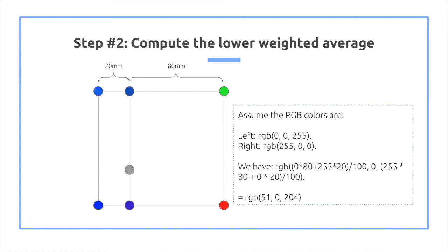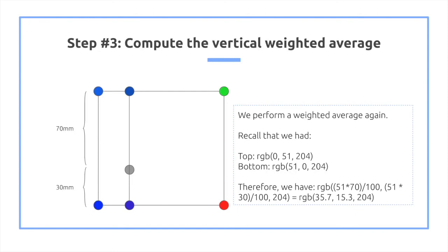We actually do the exact same thing on the bottom. We take the blue and the red, and we get an RGB of sort of a purplish color. And then the last step is actually doing the exact same thing for vertically.